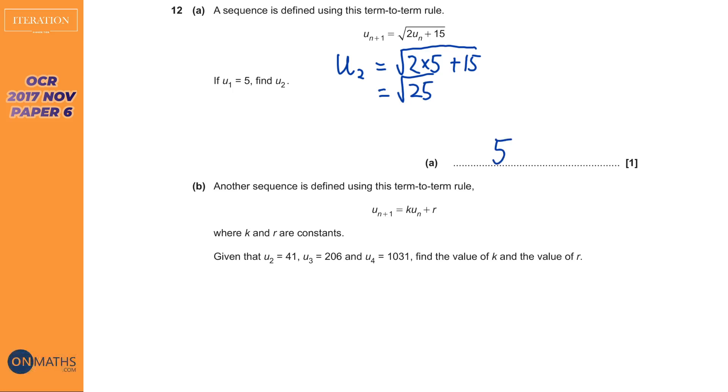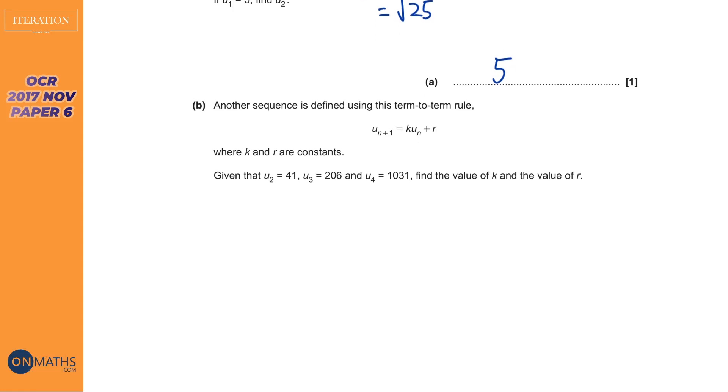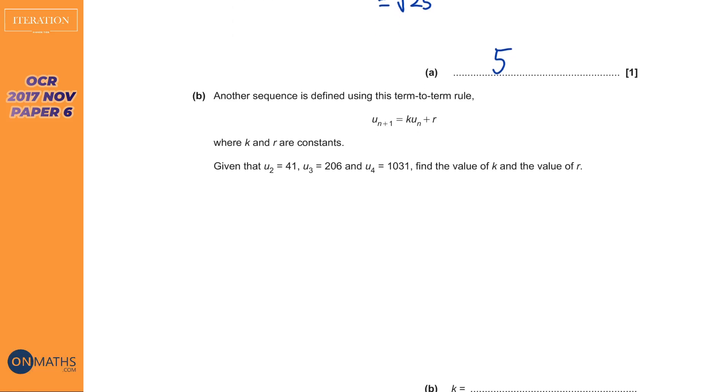It says another sequence here, and this is a much harder question, involves getting the previous term, times it by k and adding r. So we've obviously got to find out what k and r are. So what we're going to do is we're going to find 206. So we're going to get 206 by timesing the previous term, which is 41, by k, so it'd be 41k, and then adding r.